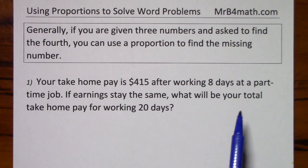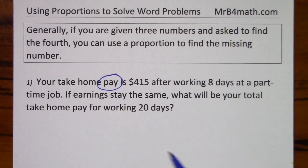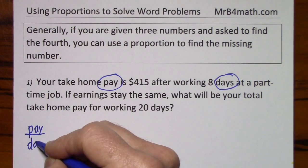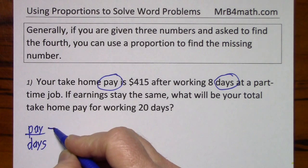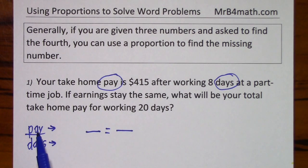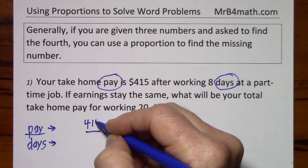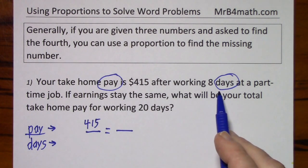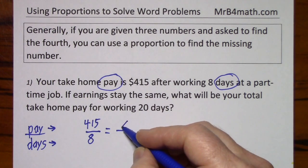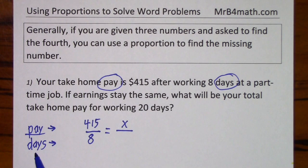What I like to do is just pick out the two categories that they're giving me: pay and days, and just use them in the order they're given. So we're going to have pay over days and just stick with that order. I'm going to give myself some room here to work with. So take home pay is $415 for working eight days. Pay - what will be your pay for working 20 days. Notice days are on the bottom.